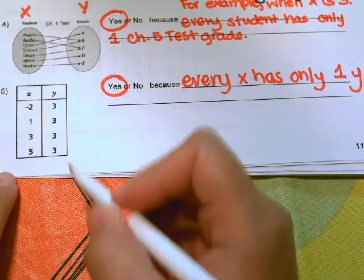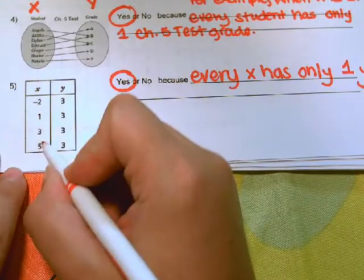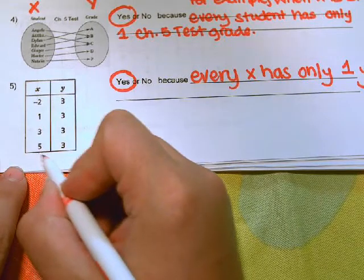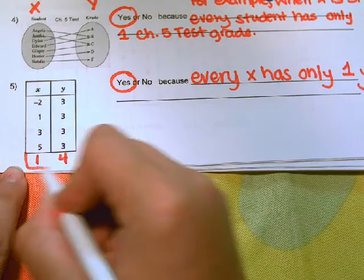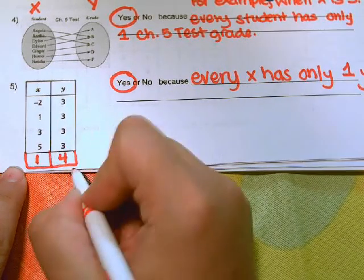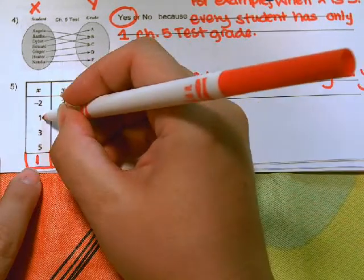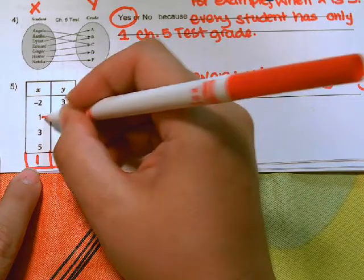Now let me show you what would make it not a function. If I were to put, let's say a one here, and then a four here, if I were to add that, then it would not be a function because when X is one, it has a value of three and four. That wasn't the case in this problem, so it was a function.